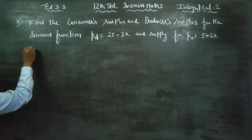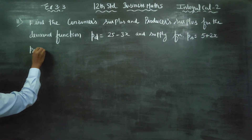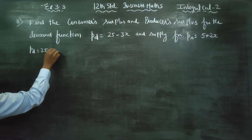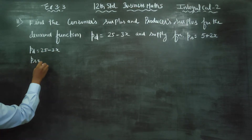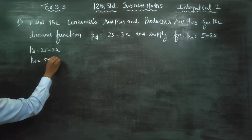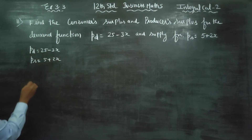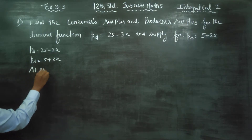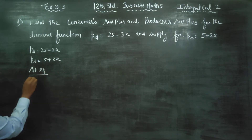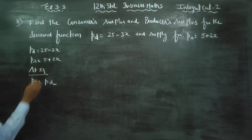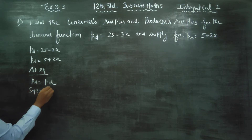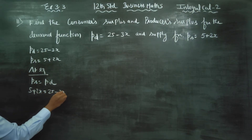The demand function PD is 25 minus 3X, and the supply function is 5 plus 2X. At equilibrium, the supply function equals the demand function. Supply function answer: 5 plus 2X; demand function answer: 25 minus 3X.